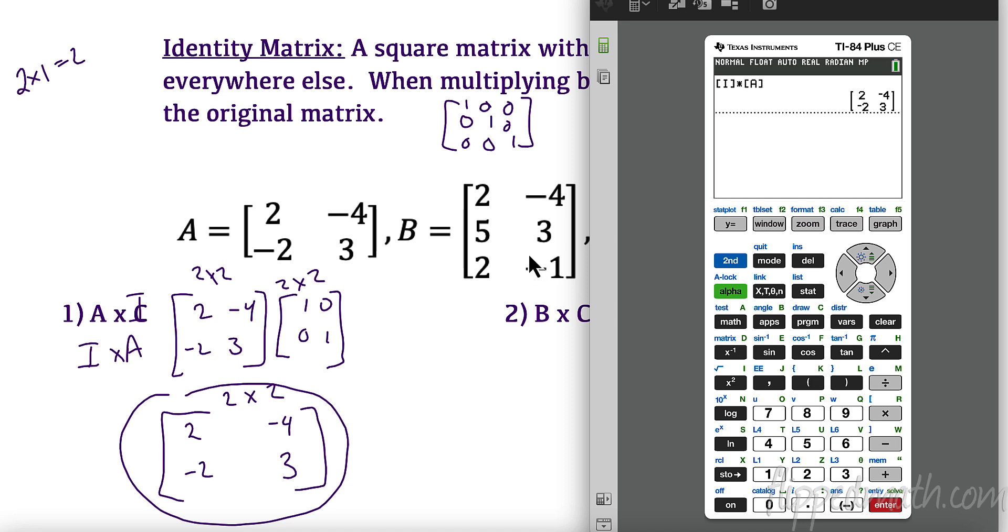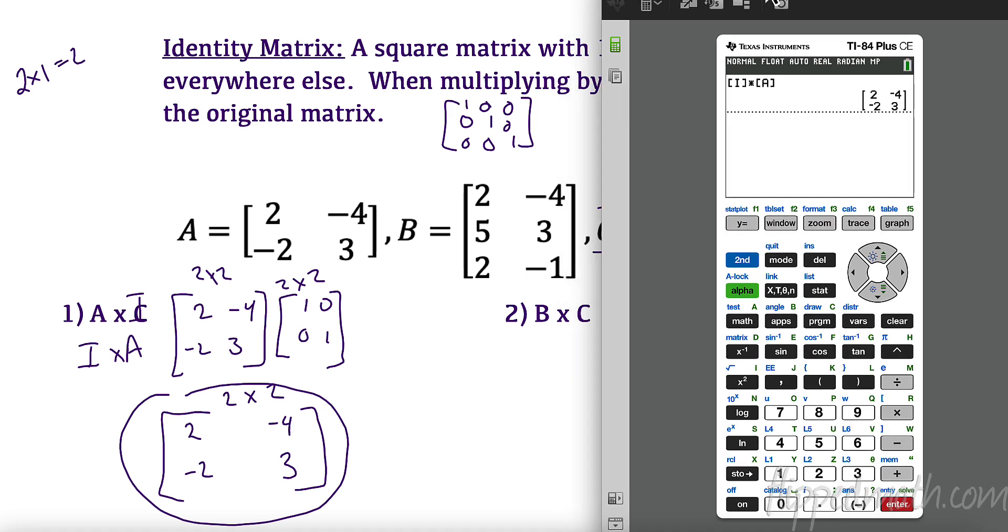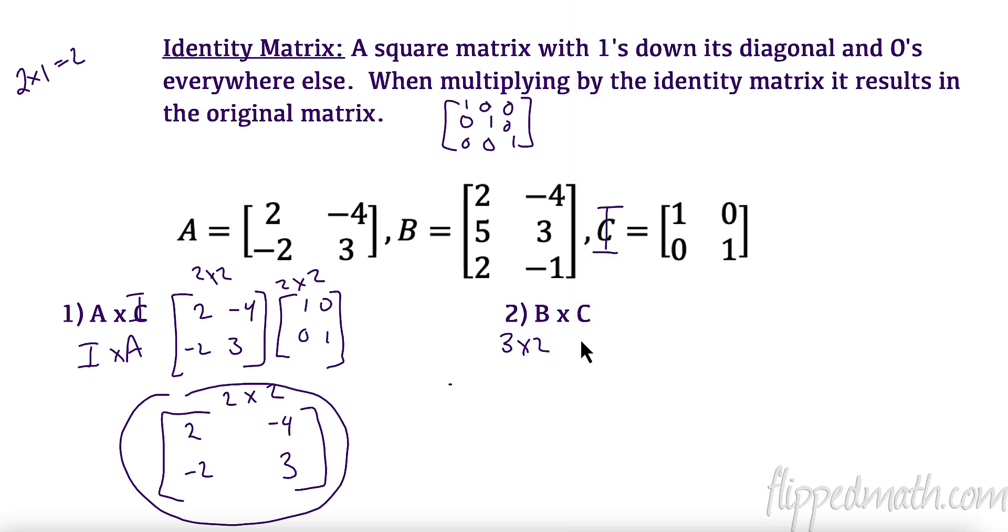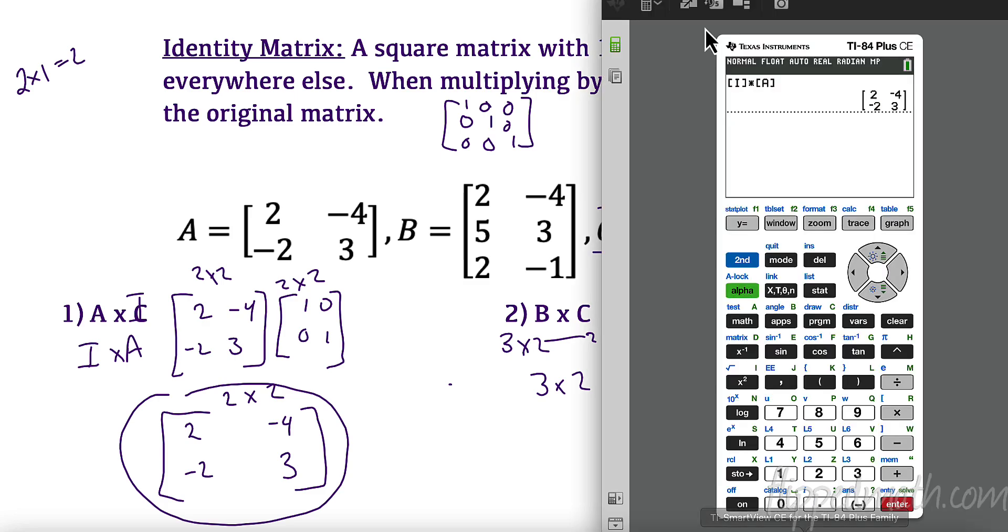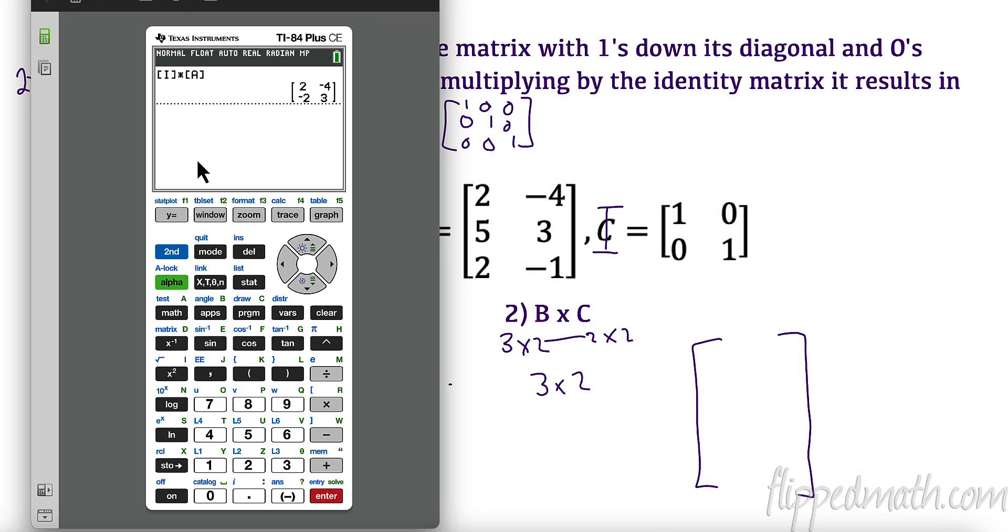Now, let's try something else. Let's try and multiply B times our identity matrix. The first thing we want to talk about here, this is now a 3 by 2. And, this is a 2 by 2. These match, and I get a 3 by 2 back. So, the possibility of getting the matrix I want back is possible. Let's see if it's reality, though. So, I believe I have matrix B in there already. So, I'm going to go matrix B times matrix I. And, what do we get? We got 2, negative 4, 5, 3, 2, negative 1. So, yes.